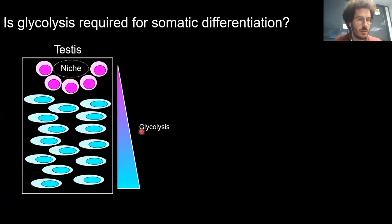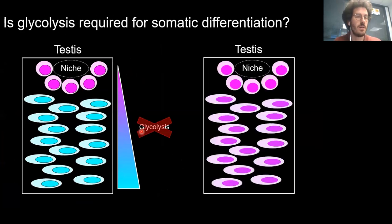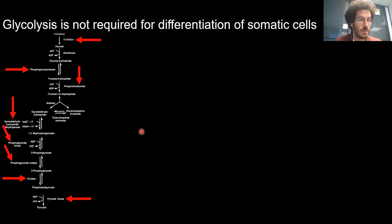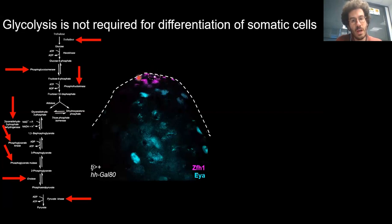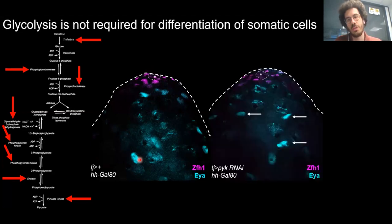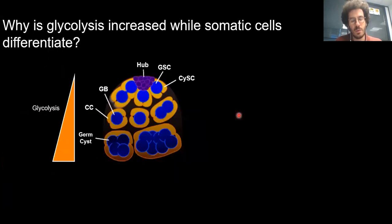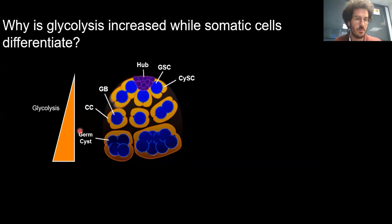We then asked whether glycolysis is required for somatic cell differentiation. If so, knocking down glycolytic enzymes should block differentiation. We knocked down glycolytic enzymes specifically in the somatic lineage and compared the resulting testes to controls. We observed no differences — fully differentiated cyst cells were still present away from the niche. So glycolysis increases as somatic cells differentiate, but is not required autonomously within the somatic lineage.